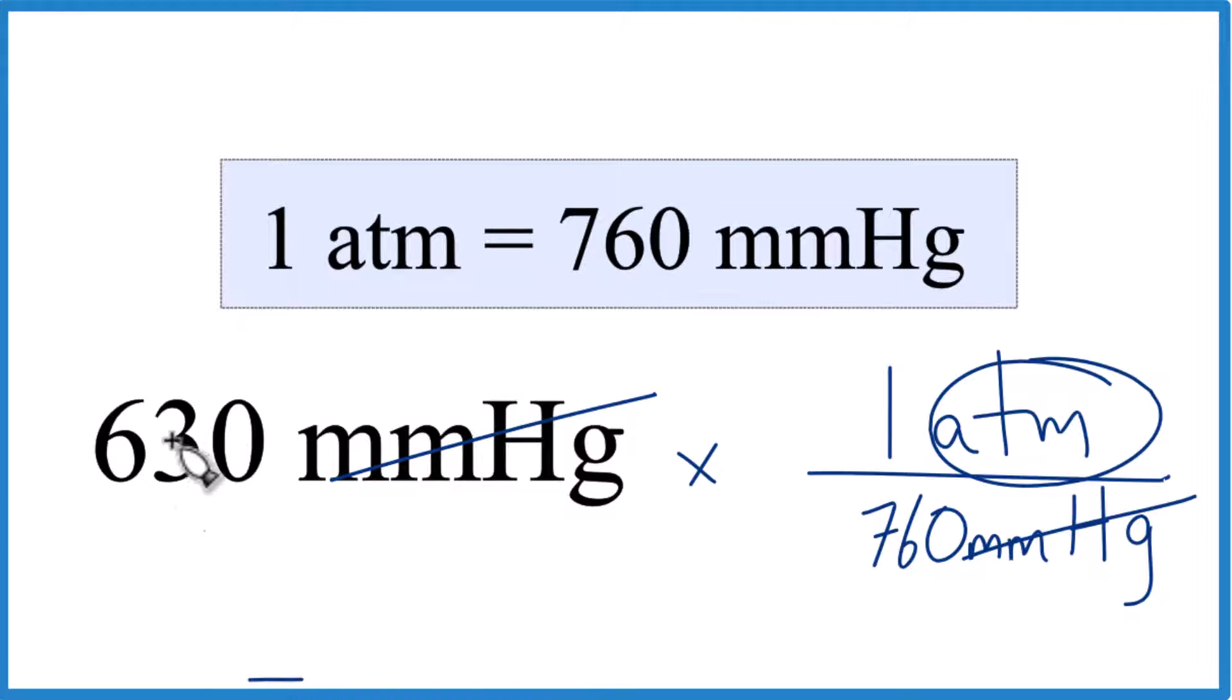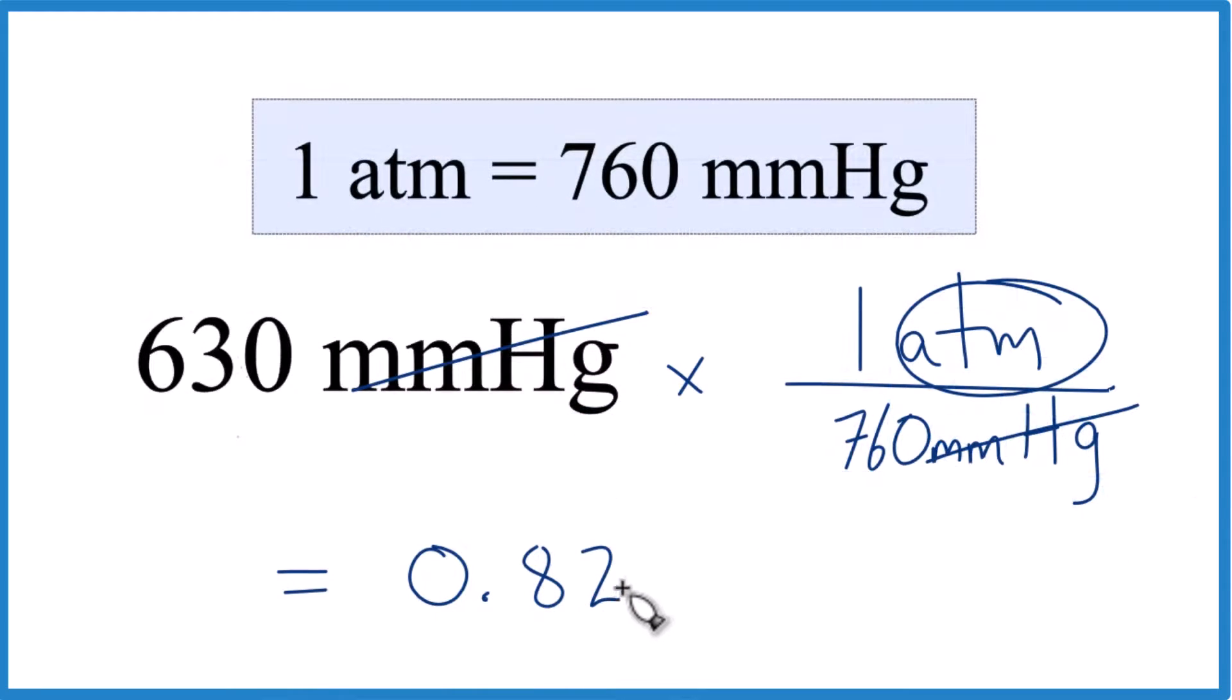So essentially, 630 divided by 760, 0.8289. So let's call it 0.829, and the units, atmospheres, because that's all that's left. That's how we know we did it right.